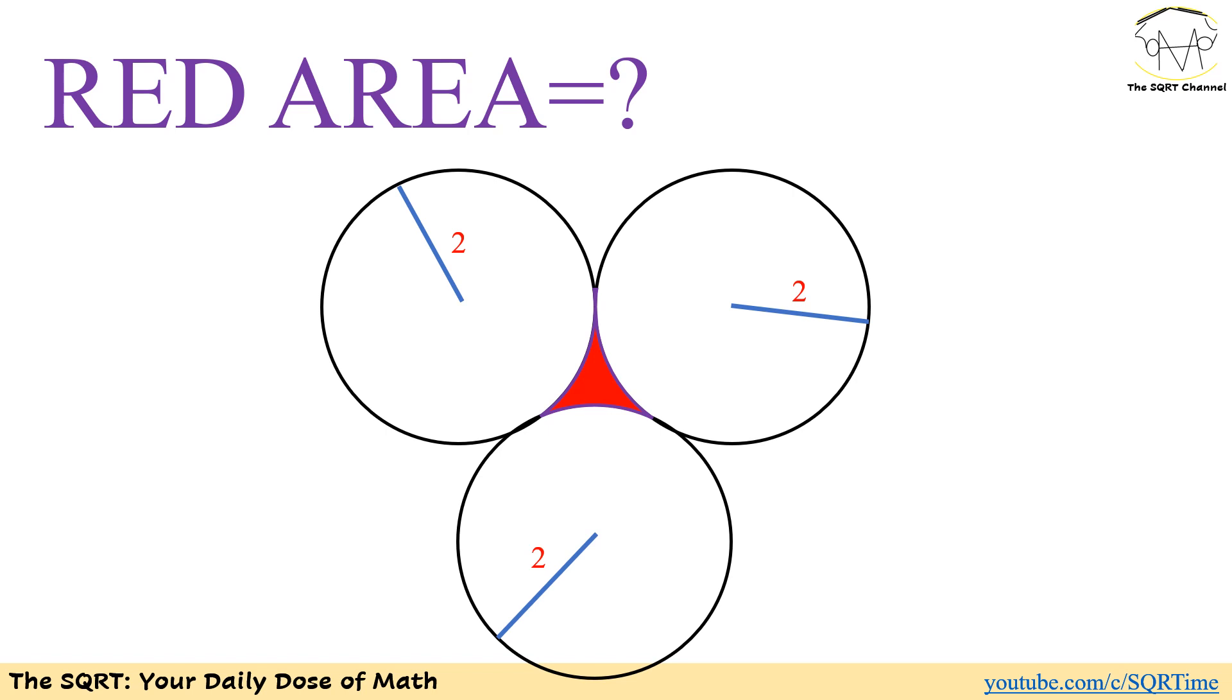In such problems they ask us to find the area that is colored. Here we have three circles. The radius of each of these three circles is two and we are going to find what is between these three circles.